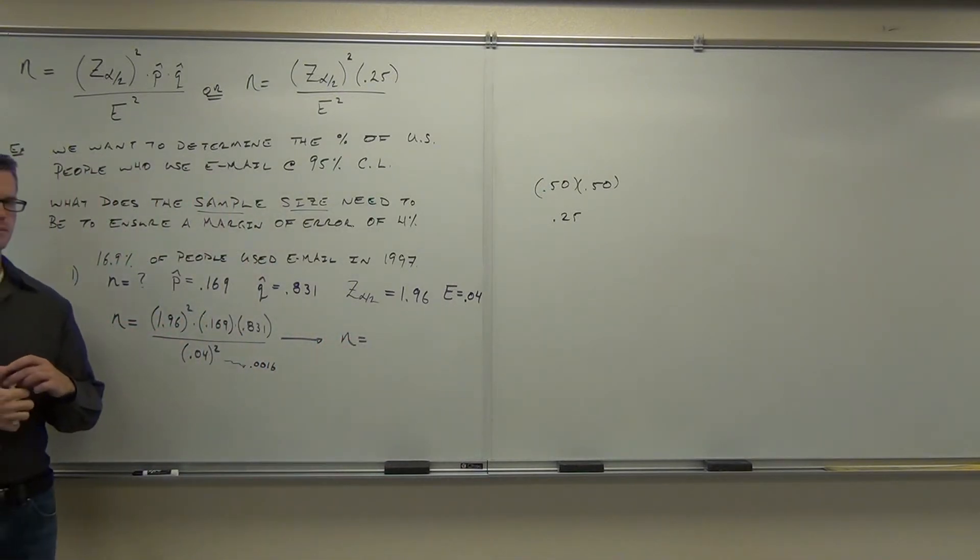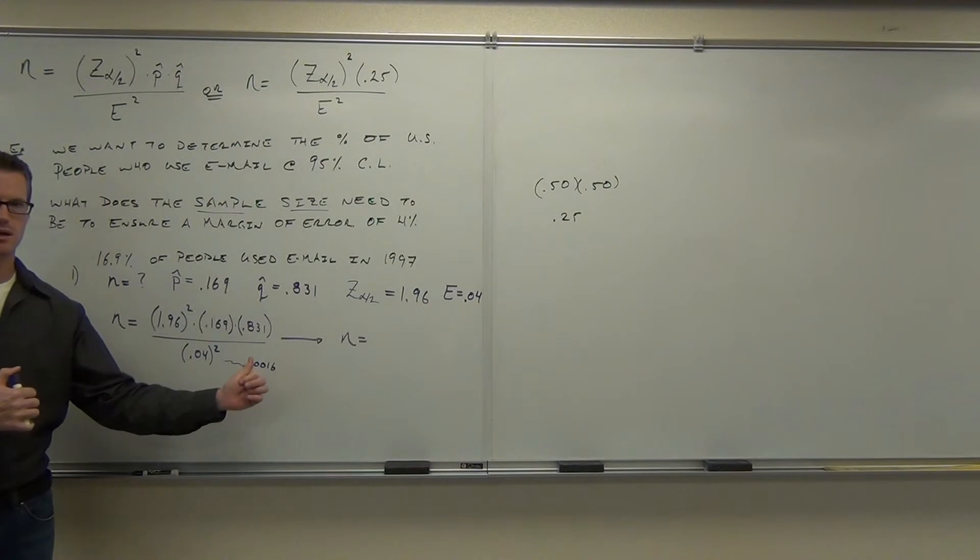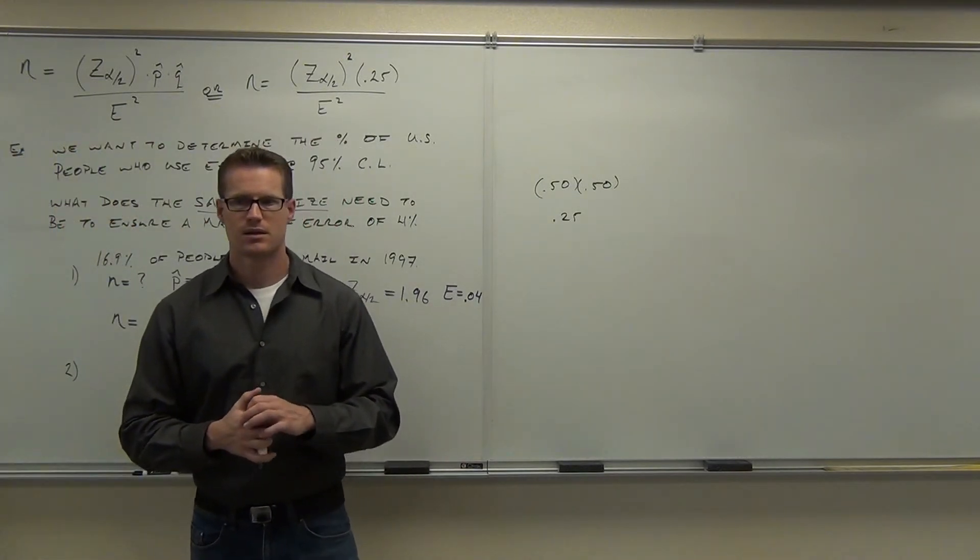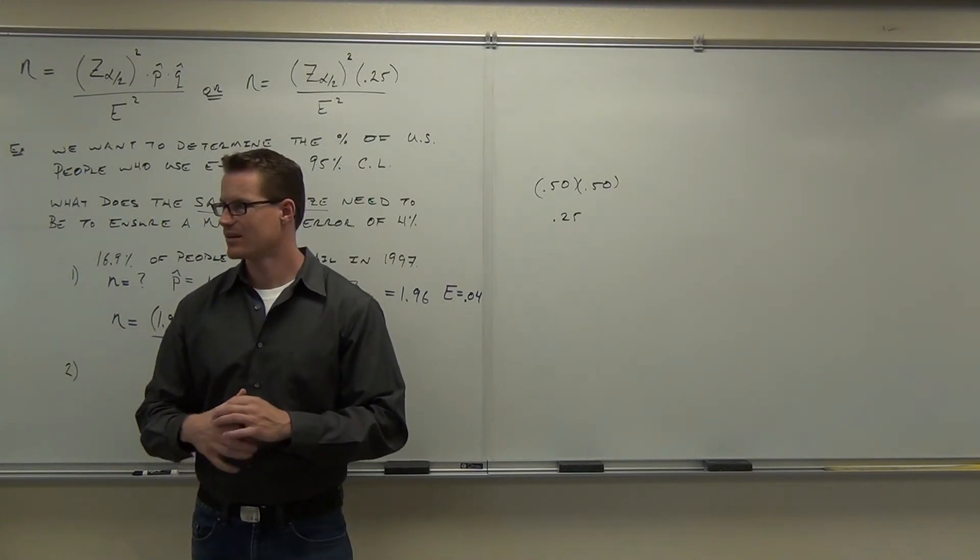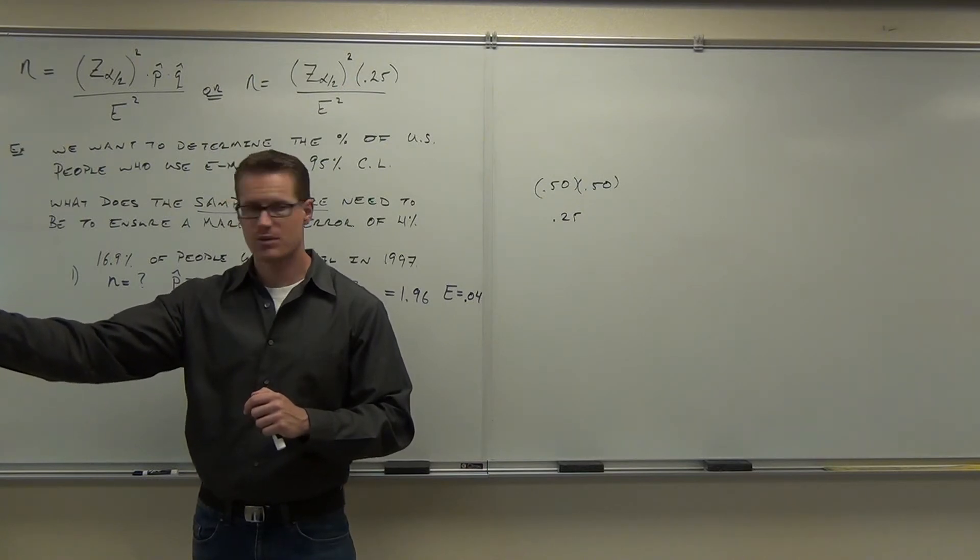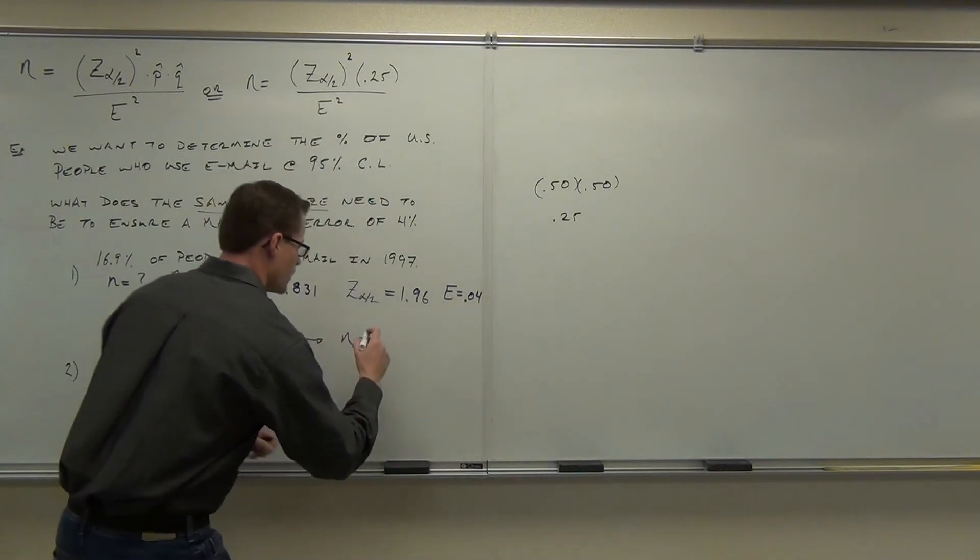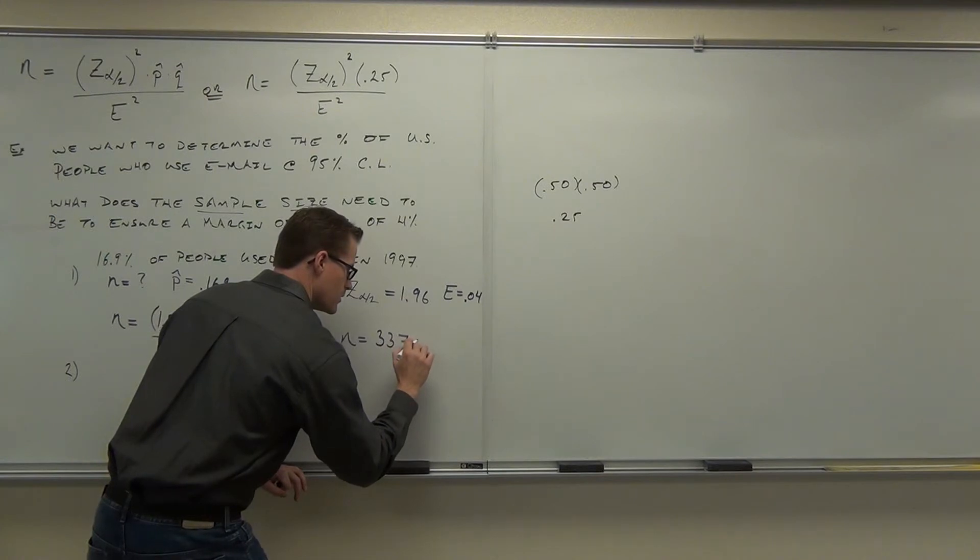Have you done that? So you did 1.96 squared, yes? Times this, times this, divided by this thing. What did you get? You got 337 point something? Did you guys get 337 point something? 337.194.